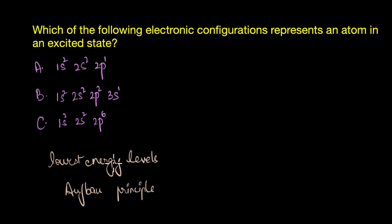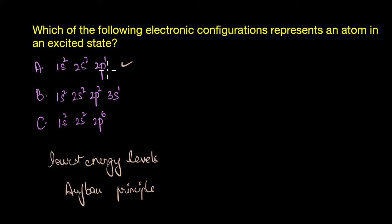Examining the options: the first configuration, 1s2 2s2 2p1, follows the Aufbau principle — the 1s orbital fills first, then 2s, and the last electron enters the higher-energy 2p orbital. This is a ground state. The second option, 1s2 2s2 2p2 3s1, does not follow the Aufbau principle.